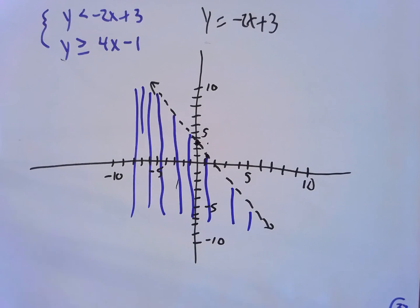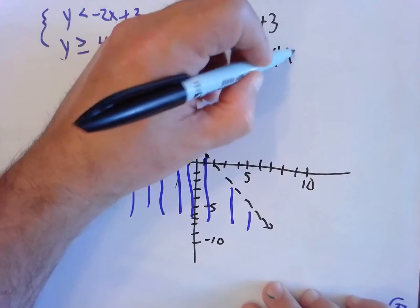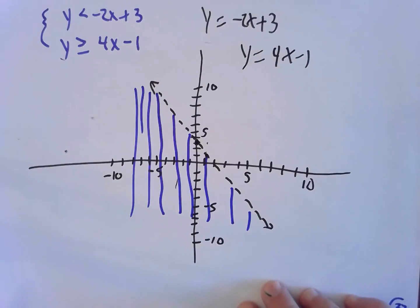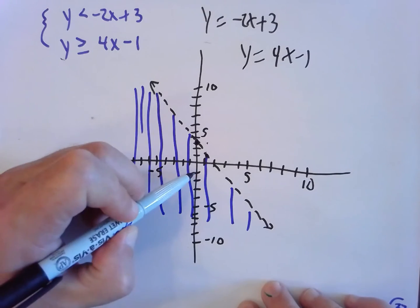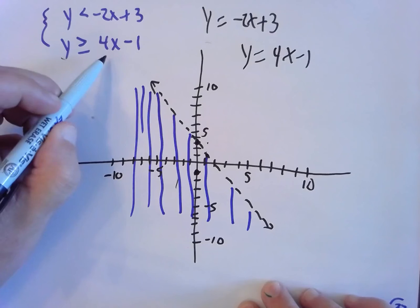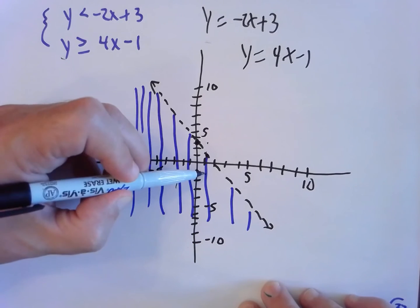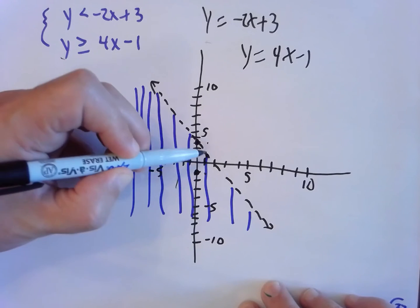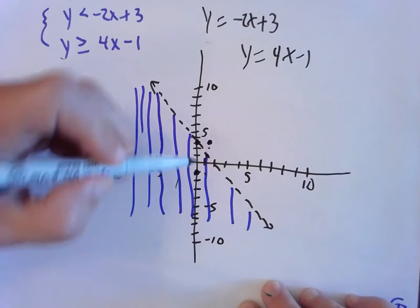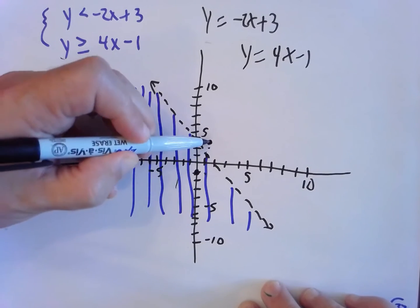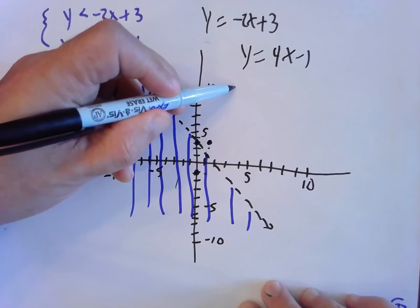Now graph y equals 4x minus 1 on top. The y-intercept is (0, negative 1). Slope is 4, so over 1 and up 4 brings us to (1, 3). Those are two points on the line. This time there is an equal sign, so we draw a solid line.